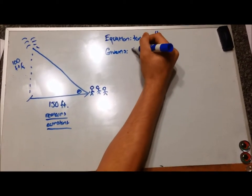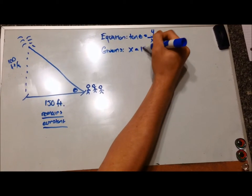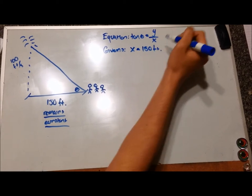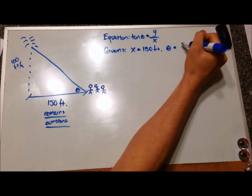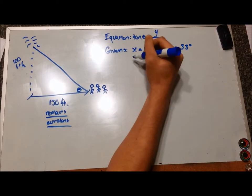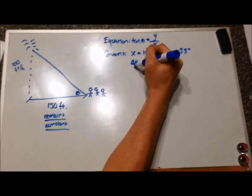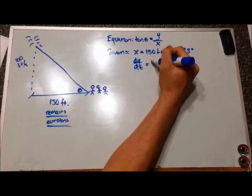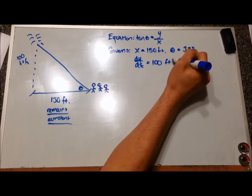Our givens in this situation will be that x is always equal to 150 feet. Later, we can plug in that theta is equal to 33 degrees, and the rate of change in the y direction with respect to time is equal to 100 feet per second.